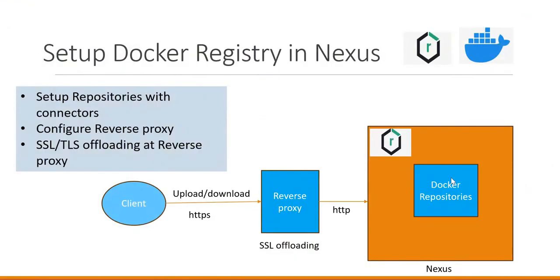In addition to that, when the docker client tries to access the docker registry, the docker client needs to access via SSL or TLS. That means the server needs to provide the HTTPS connection and the client will use the certificate to pull or push images in the Nexus docker registry. We can configure the SSL certificates in the docker registry of Nexus itself, or we can offload the SSL by configuring the SSL certificates at the reverse proxy. When the docker client sends the request via HTTPS, the SSL will be offloaded at the reverse proxy and the connection from the reverse proxy to the docker registry will be via HTTP. These are the two things we need to note when configuring docker registries in Nexus. Let us see how to set up these things in the demo.